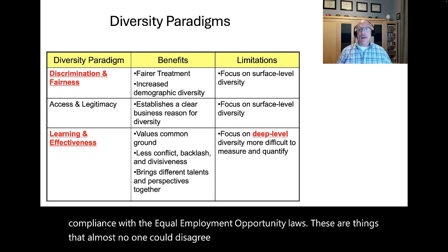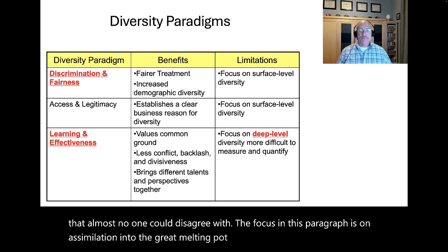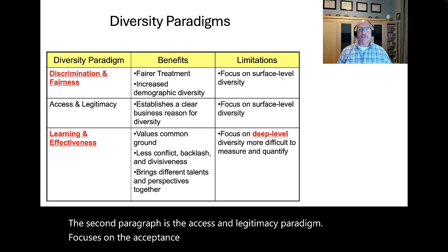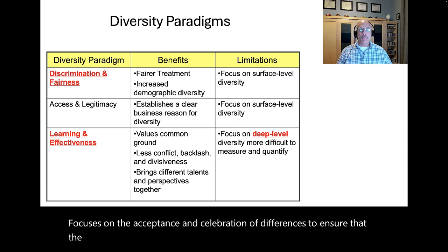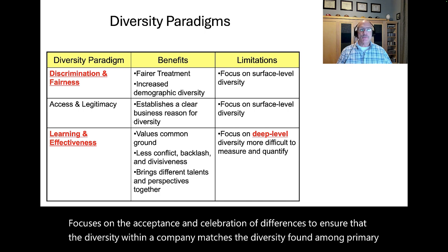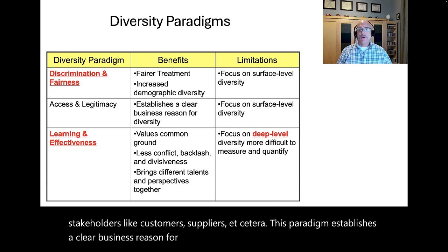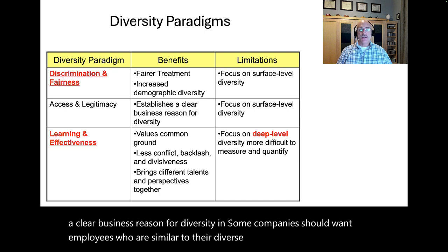The focus of the discrimination and fairness paradigm is on assimilation into the great melting pot of society. The second is the access and legitimacy paradigm, which focuses on the acceptance and celebration of differences to ensure that the diversity within a company matches the diversity found among primary stakeholders, like customers, suppliers, etc. This paradigm establishes a clear business reason for diversity — companies should want employees who are similar to their diverse customers and suppliers. Here the focus is on differentiation, a celebration of our differences and the value we place on them.